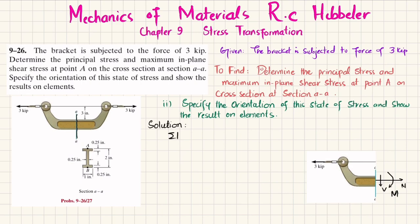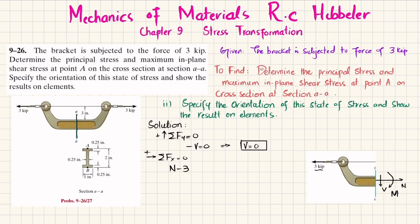The first equation of equilibrium: the sum of all forces along the Y direction must equal zero, with upward forces taken as positive. This gives us the shear force V equal to zero. Next, summing forces along the X direction — with force in this direction taken as positive — N is in the positive direction and the 3-kip force is negative, so N equals 3 kips.